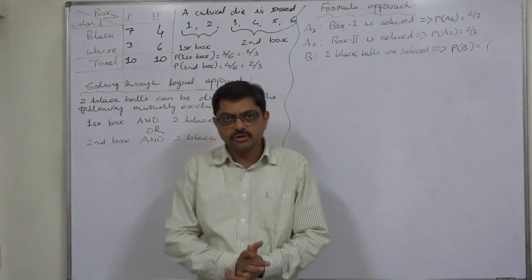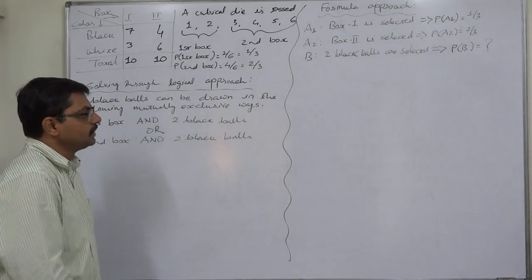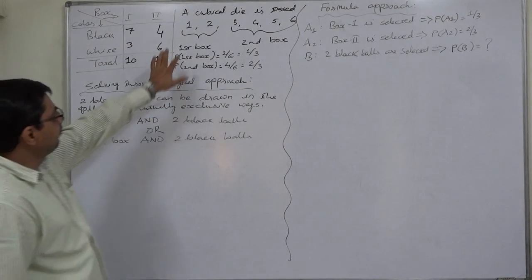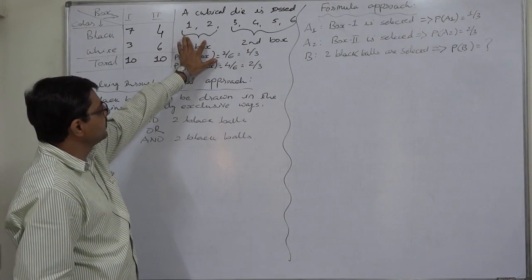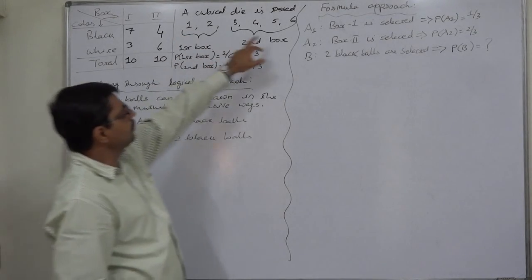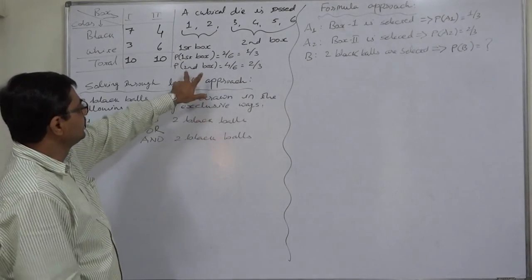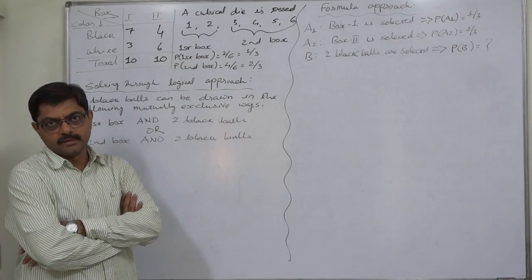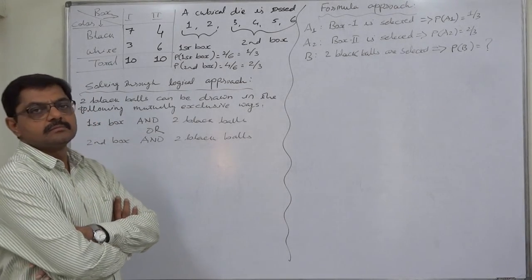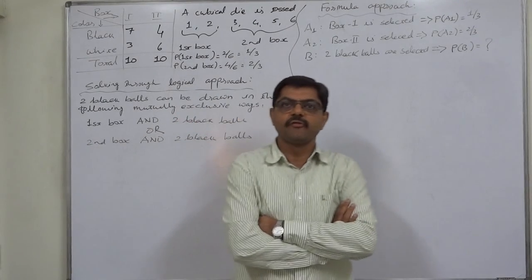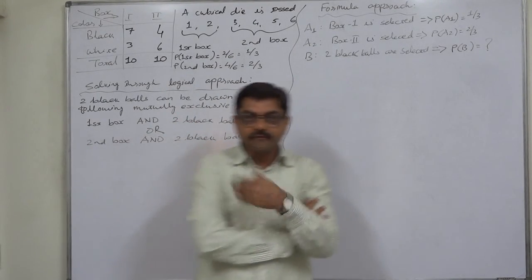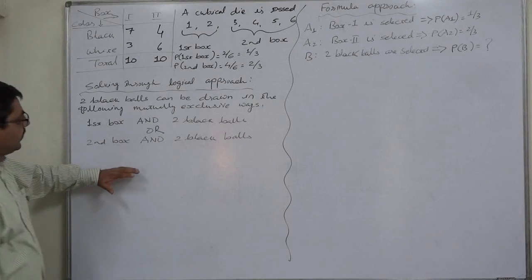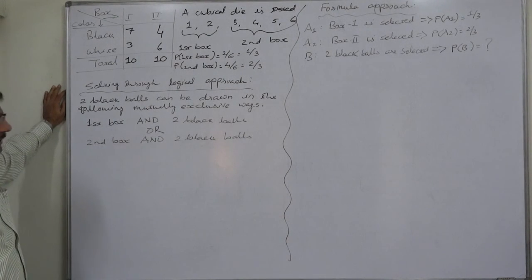First of all, we are interested in the case where two black balls are drawn. The situation is: a die is tossed — if 1 or 2 appears, the first box is selected; if 3, 4, 5, or 6 appears, the second box is selected. We need to calculate the probability that two black balls are drawn, and from that we can calculate the conditional probability of box 2 given two black balls. We will first solve the problem through a logical approach.